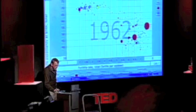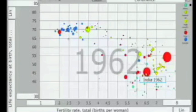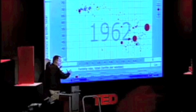Every bubble here is a country. This country over here, this is China, this is India. The size of the bubble is the population and on this axis here, I put fertility rate.